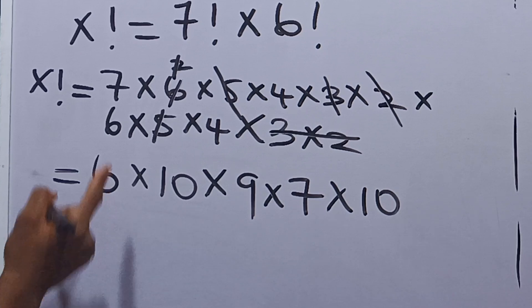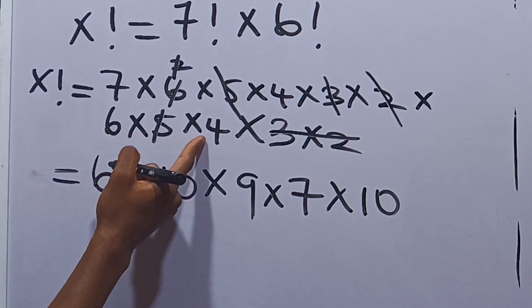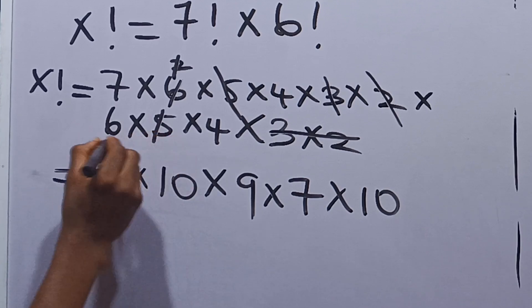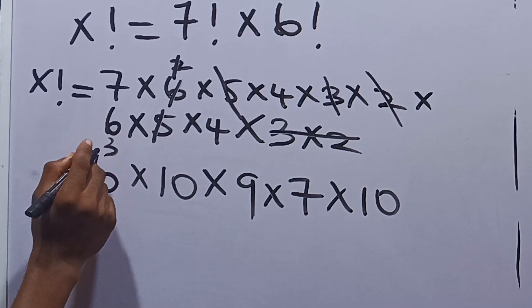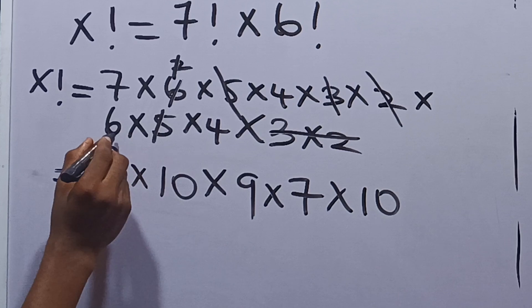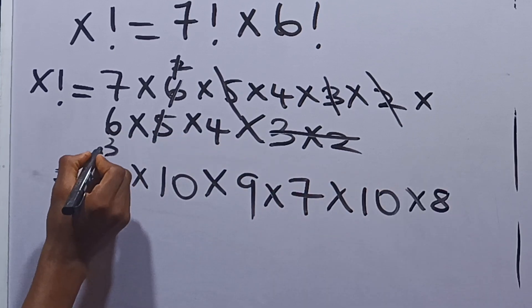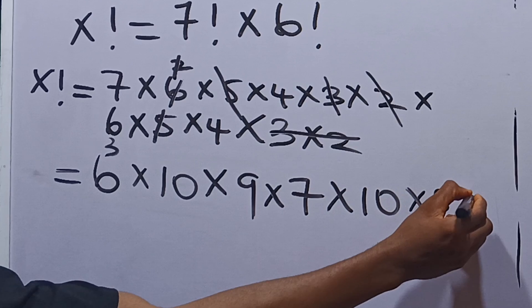Lastly, we have 6 and we have 4. We can take 2 from 6, so that you are left with 3. So we can take 2 from 4. Multiply 4 by that 2, we have 8. So that we are left with 3 here.